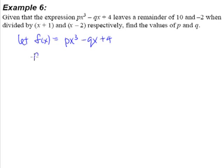We know that when divided by (x + 1), that means when you substitute in x = -1, which we will get -p + q + 4, which will give us a remainder of 10.